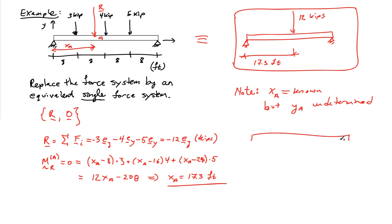If I placed that force of 12 kips along the top of the beam, but I could have equally put it at the bottom of the beam as long as I kept this distance at 17.3 feet.